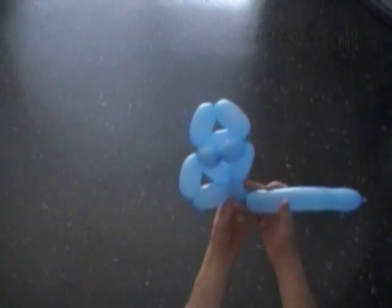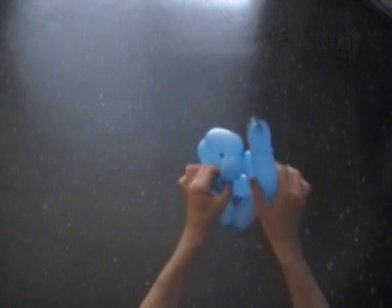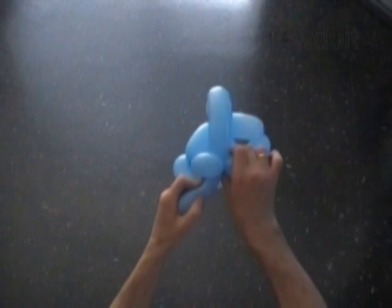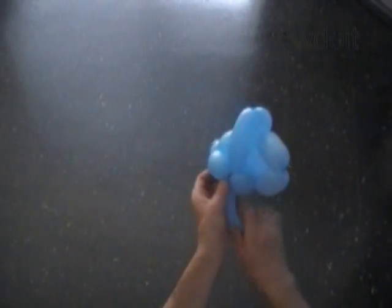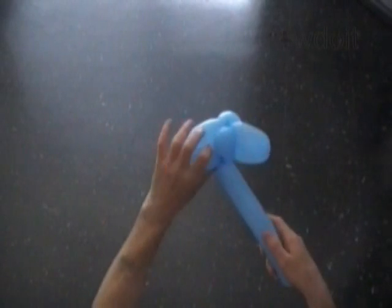Lock the free end of the 10th bubble between the 7th and the 8th bubbles. We have to pull the rest of the balloon through the loop of bubbles. And there is not much room to do it. So be careful. Try not to pop any bubbles.